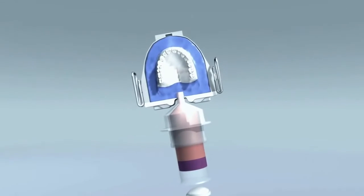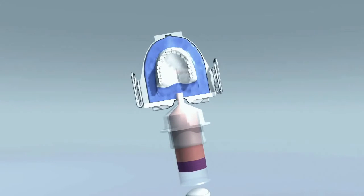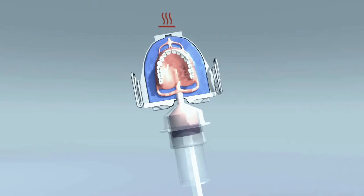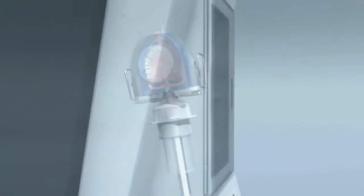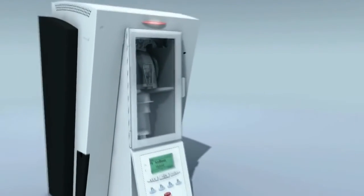With IvoBase, the air in the anterior region automatically and completely escapes through the aeration filter until the flow of the resin seals the aeration filter and sets. This is necessary because displacement of the air through the stone is not always possible when using auto-curing polymers in the injection technique. The hollow space is thus aerated in a controlled manner, which also prevents bubbles and porosities from forming in the resin.